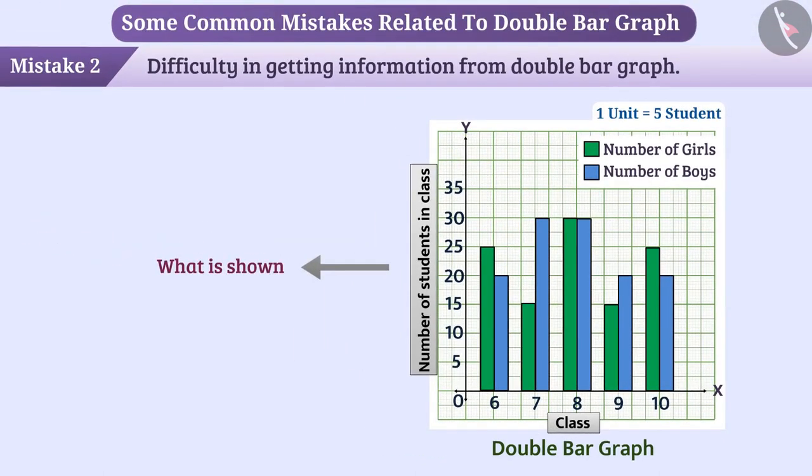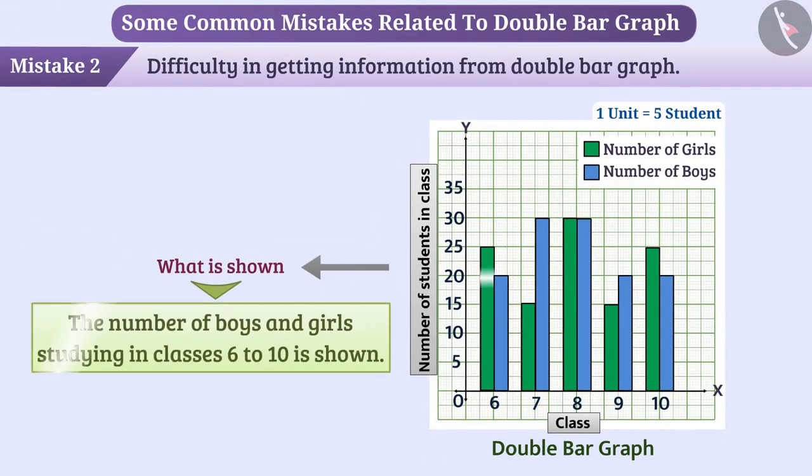With this understanding, we can say that the number of boys and girls studying in classes 6 to 10 is shown in the given double bar graph.